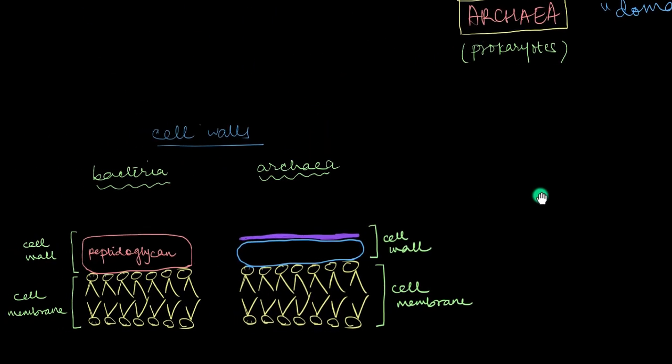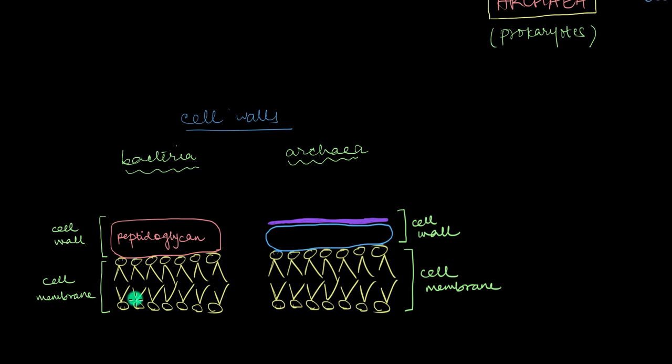Let's bring this a bit more into focus. Bacterial cell walls are made up of peptidoglycan. Archaea have cell walls too, but they are not made up of peptidoglycan. In fact, there is absolutely no peptidoglycan present anywhere in their bodies.